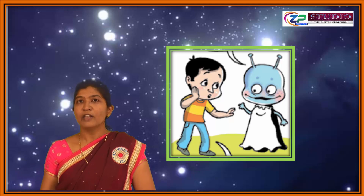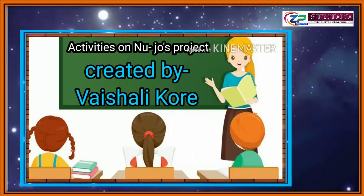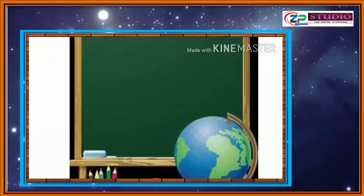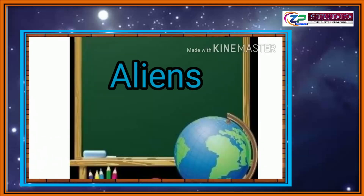We will go to the next video clip. Hello kids, how are you? Hope you are fine. Students, we have seen the chapter New Jho's project, and now we are going to see the different activities according to the chapter. Within New Jho's project, we have met one alien — an alien is a living organism from another planet.